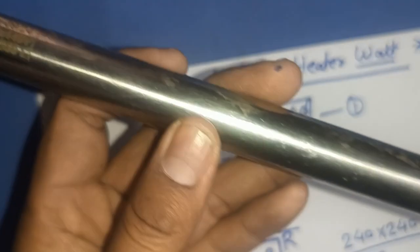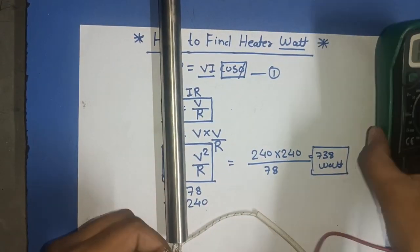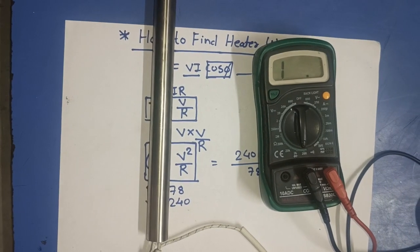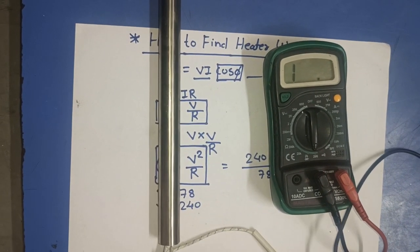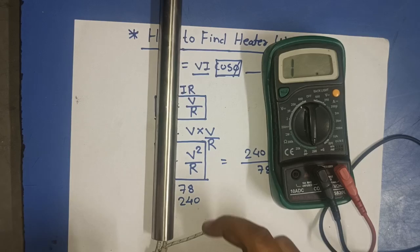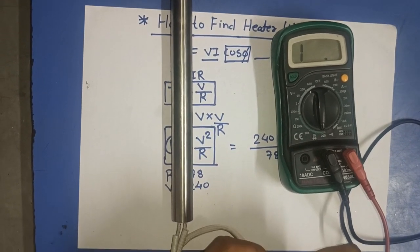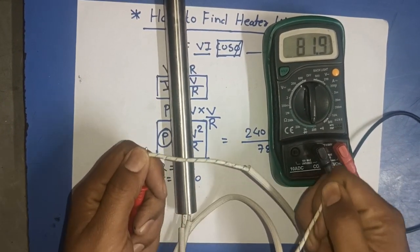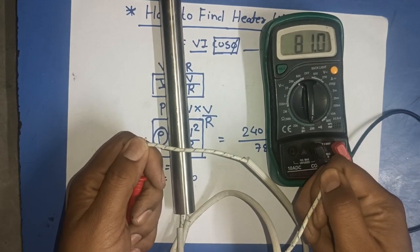Now, we have other heater of 440 volt operating voltage. So, just we find watt of this heater. Operating voltage is 440 volt. And for resistance, first we measure resistance of this heater. Just measure resistance and its resistance is 81 ohm.